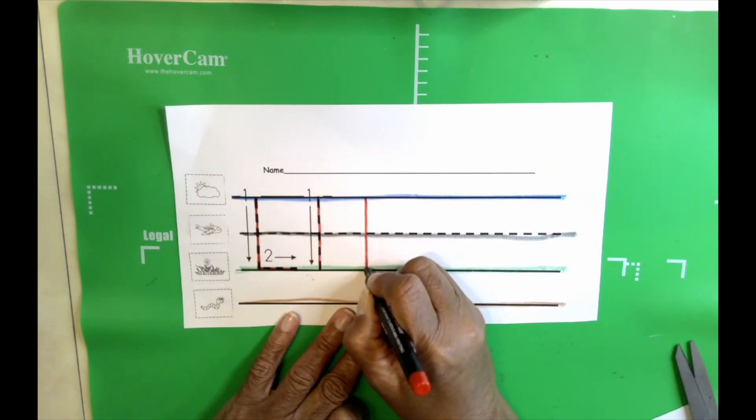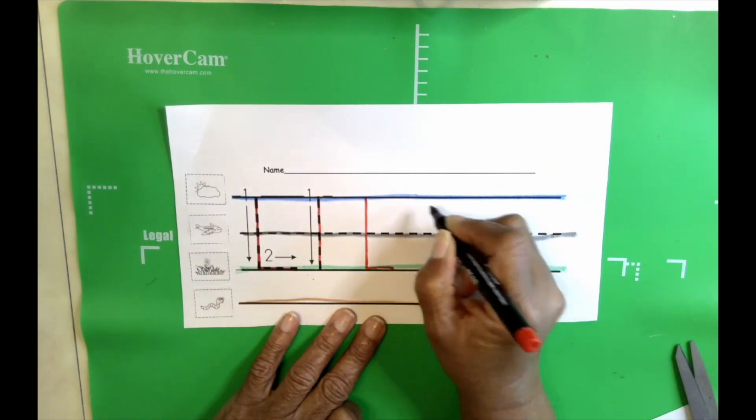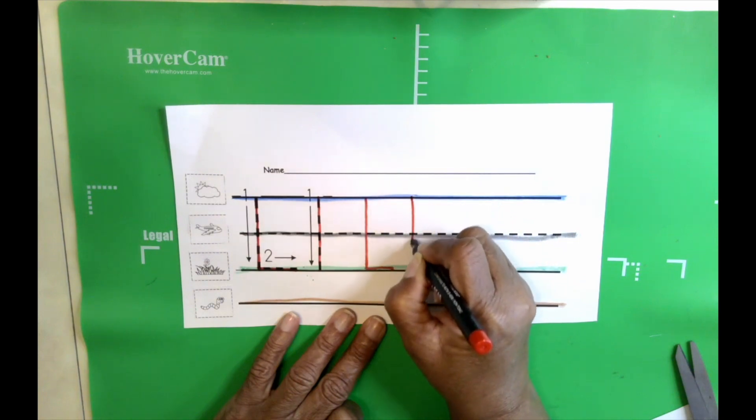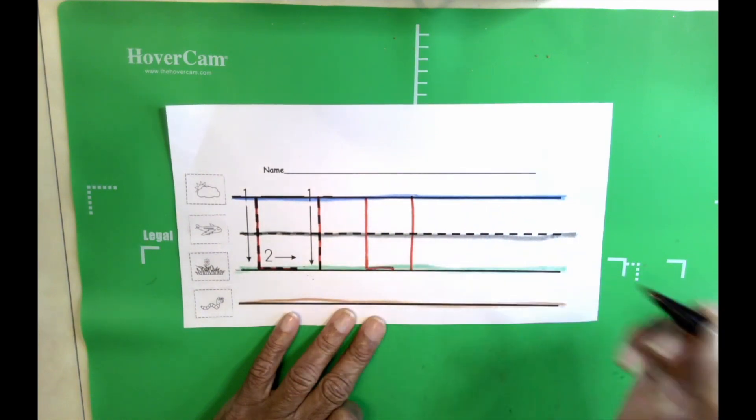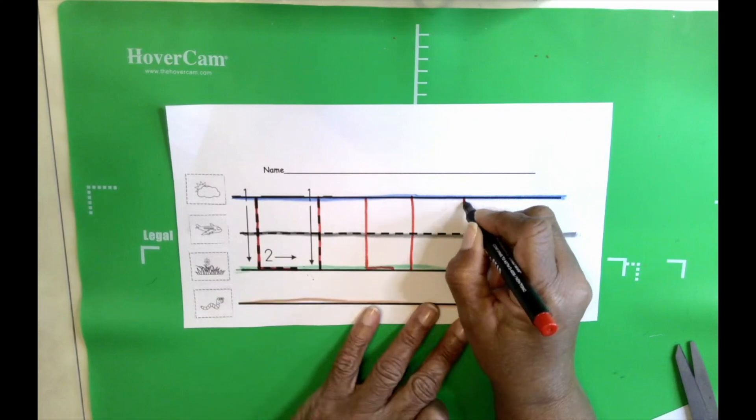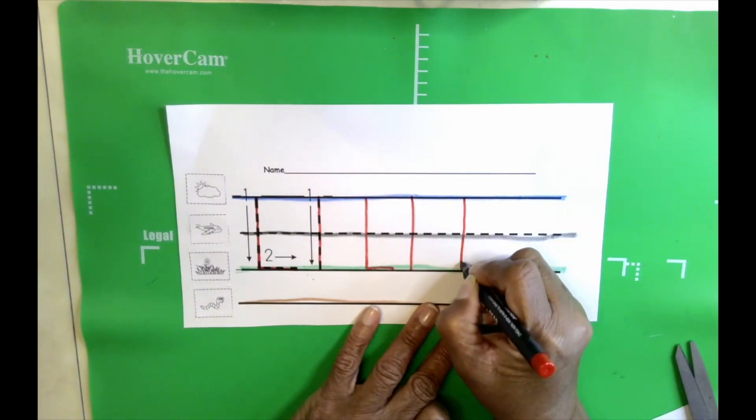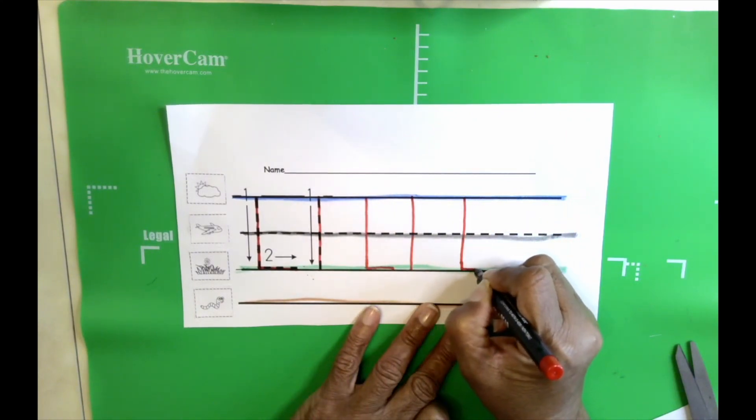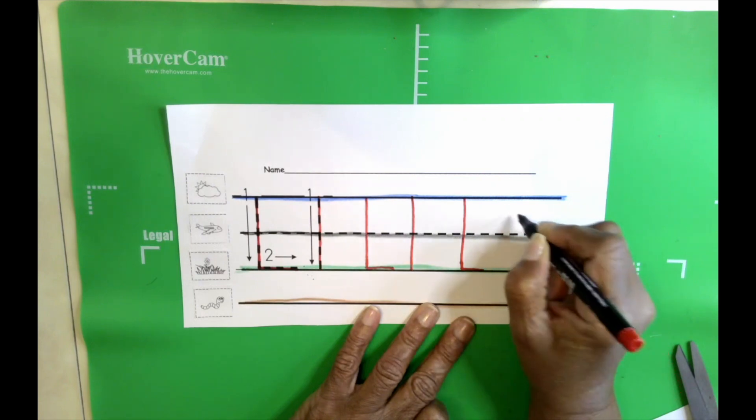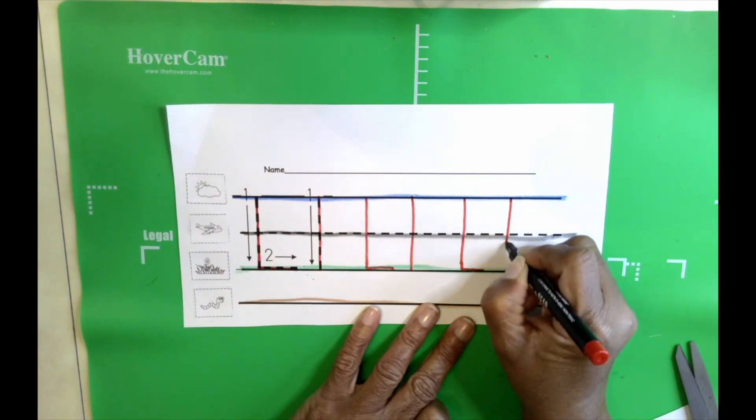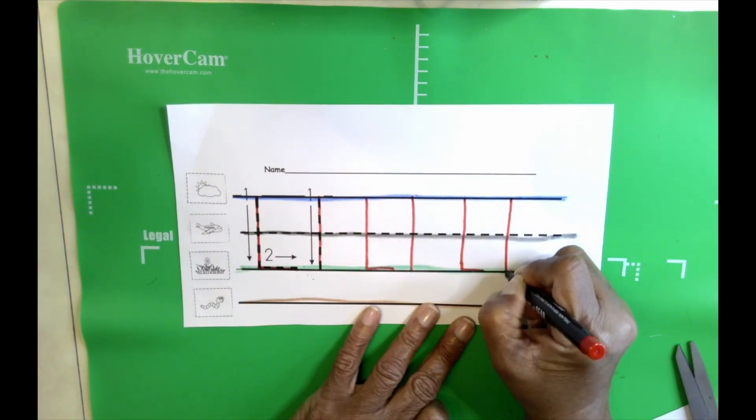All the way down and over. And then all the way down. Let's do one more. All the way down to the grass line. And over. And then all the way down to the grass line.